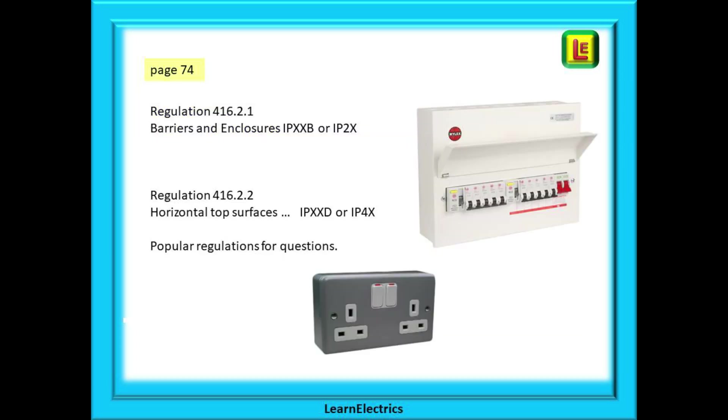Staying on page 74, two regulations to take note of and possible exam questions. 416.2.1 says that all surfaces on a barrier or enclosure shall be protected to at least IPXXB or IP2X - in other words, finger proof. 416.2.2 adds to this by telling us that horizontal top surfaces must be IPXXD or IP4X. This is sewing needle proof. Why the top surface? Well what do people use the top of the sockets or consumer units for? A shelf. They make perfect shelves for small items. Let's look at the question.